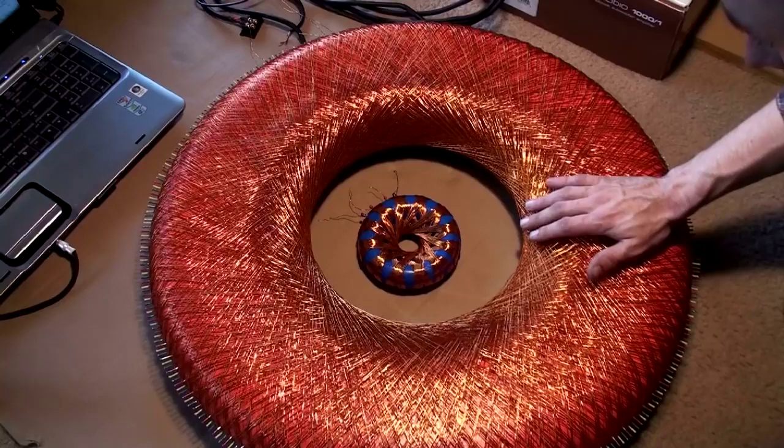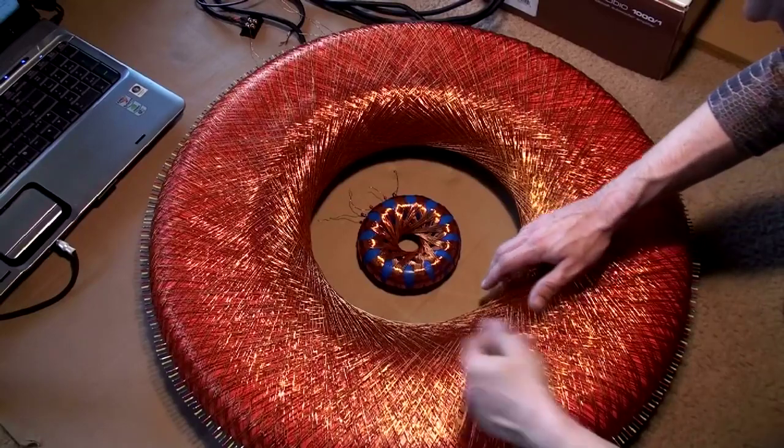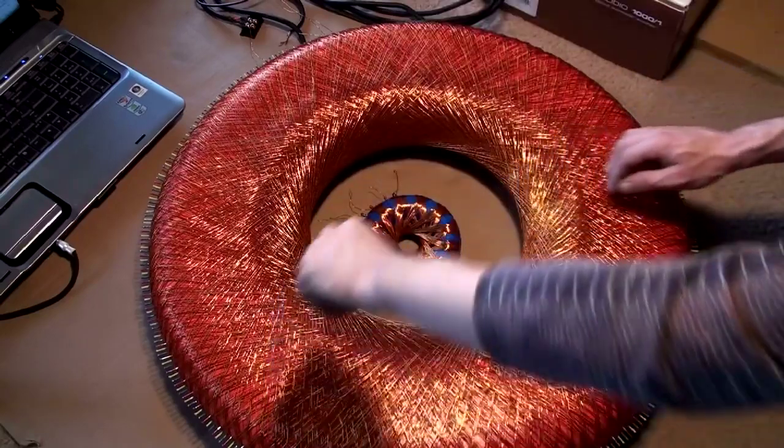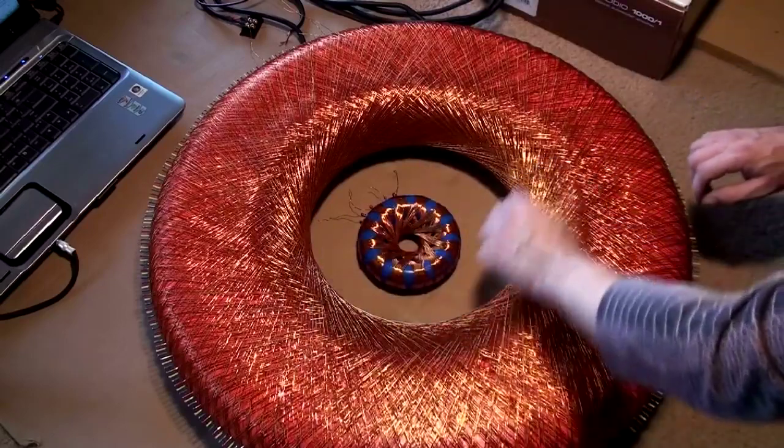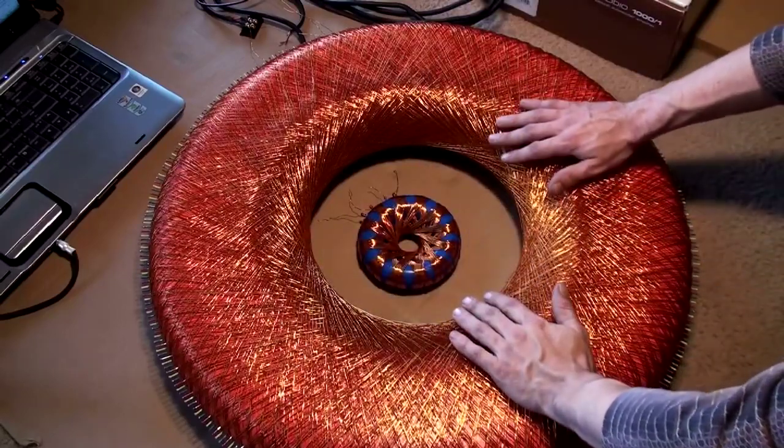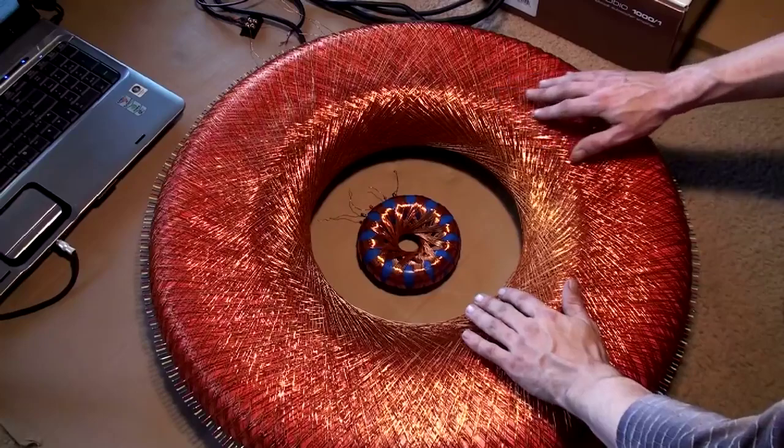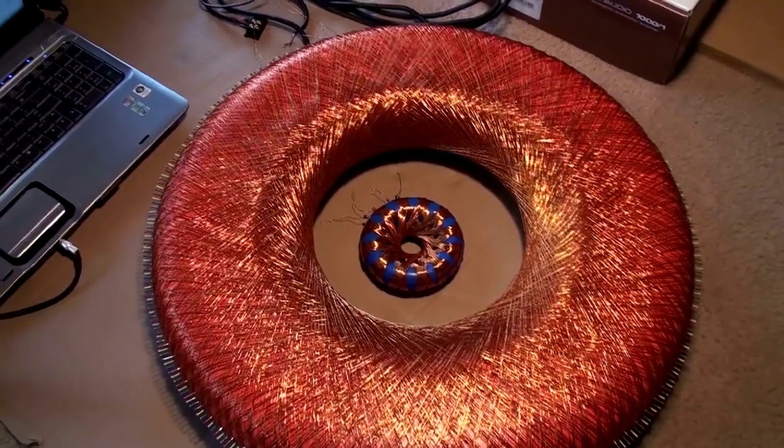But in this one, I did both of the wires at the same time. Counter-clockwise, clockwise. Counter-clockwise, clockwise. So I made a wicker basket type weave out of the two leads.